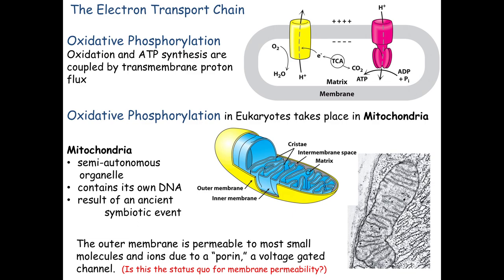The cartoon diagram in yellow represents the electron transport chain. It's not one complex but a series of complexes, drawn as one figure here. These complexes transport electrons from NADHs and FADH2s through many hands and ultimately give them to O2, which reduces O2 to water. Remember: giving electrons to something is reduction; taking electrons from something is oxidation. The protons are along for the ride.